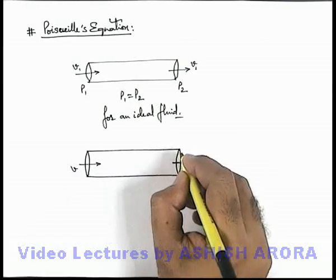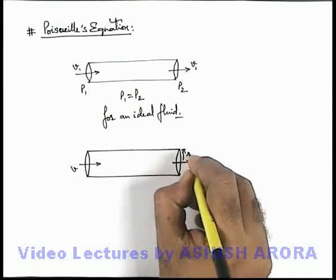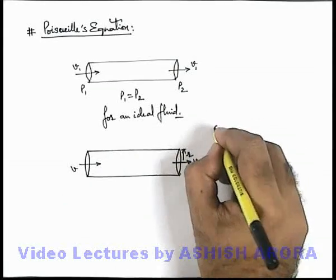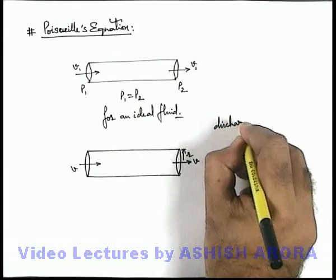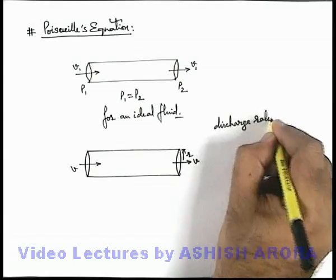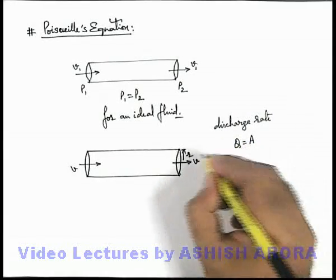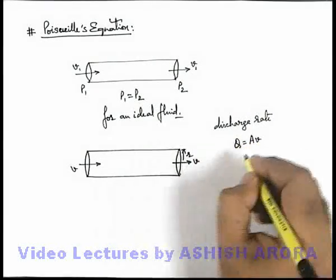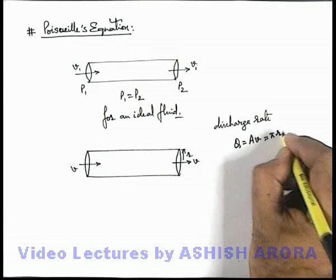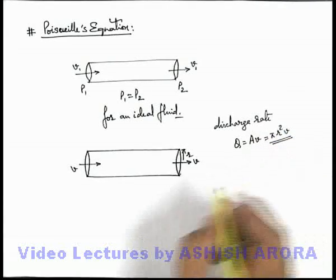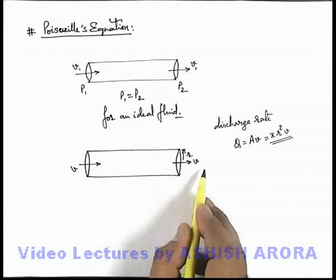Here we can say the radius of tube is r. Then the discharge rate of fluid can be written as Q, which is the product of cross sectional area multiplied by the velocity, which is πr²v. This is the discharge rate at which the fluid will discharge through the tube.